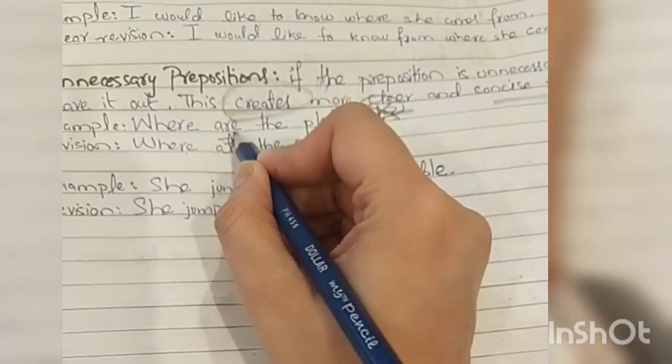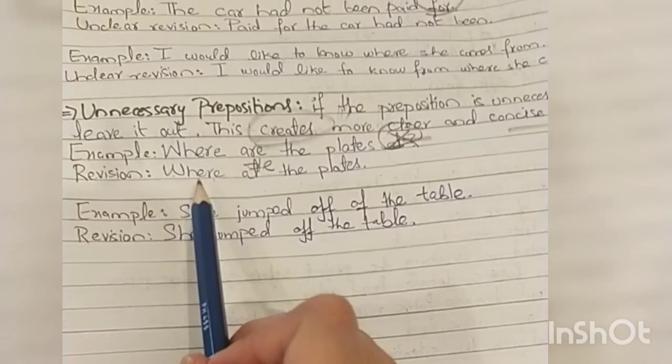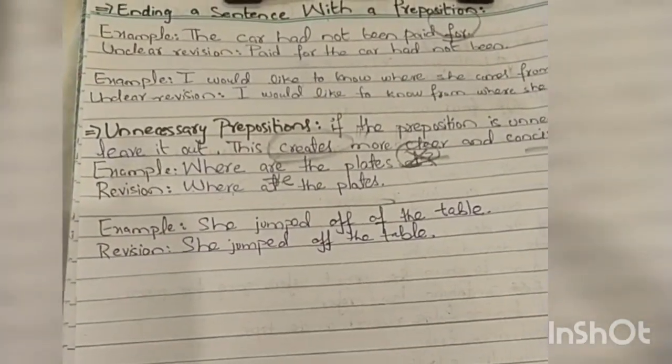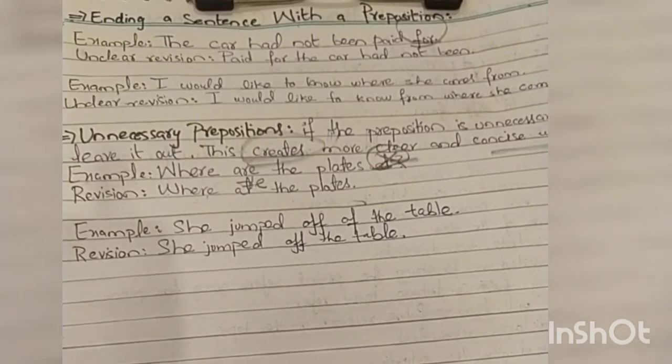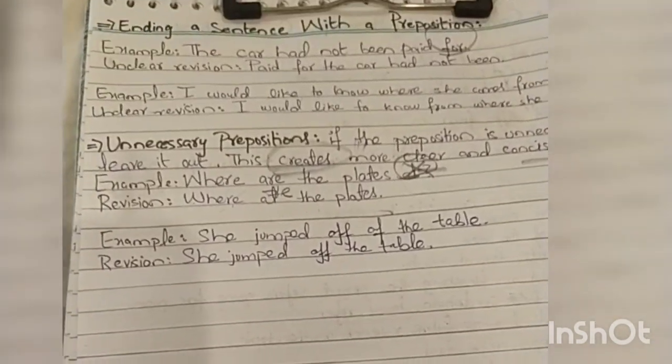Let's look at the first example: where are the plates at? The 'at' is not needed at all. What will happen in revision? Where are the plates? The example we have is where are the plates at? It doesn't need anything at all, just where are the plates?